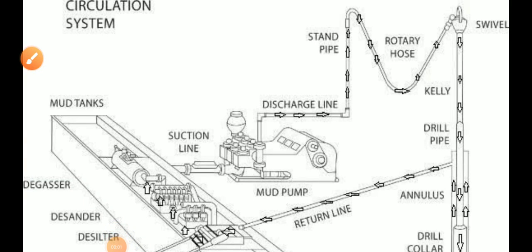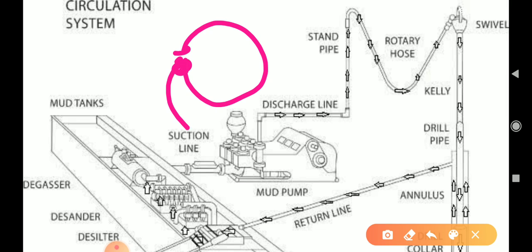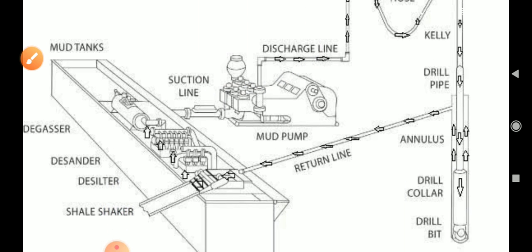In the previous video we saw what is the hoisting system, so in this video we will see what is the circulation system. The name itself tells us — circulation means the starting and end points are the same, that is called a circle. Whatever point the mud starts from, it ends back at the same point — that is called the circulation system.